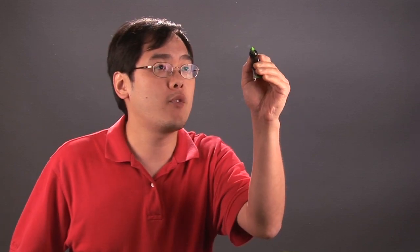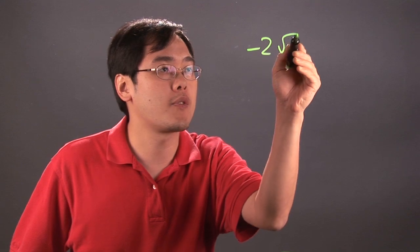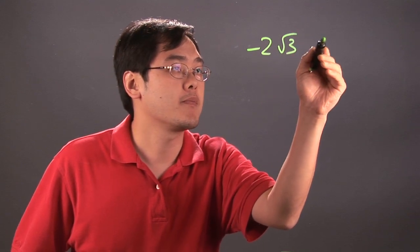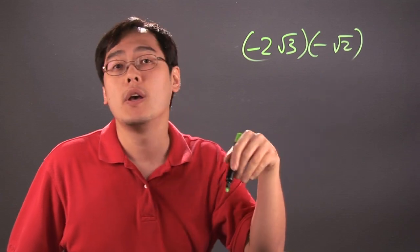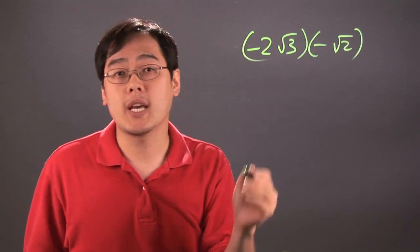So let's just do a couple of examples and you'll see how this works. Now if you have, for example, negative 2 square root of 3 times negative square root of 2, what you have to think about is negative times a negative is going to give you a positive.